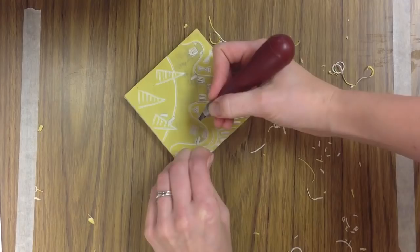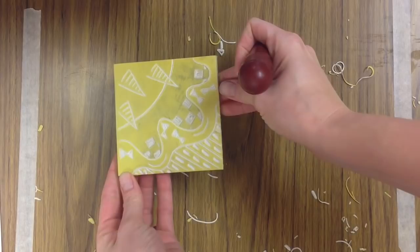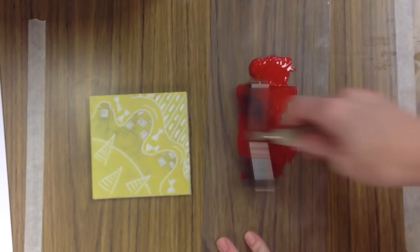Now, once I have everything carved that I want to be yellow, my block looks a little bit different, but then I go ahead and I get my brayer and I get my red ink and I can ink up my block again.